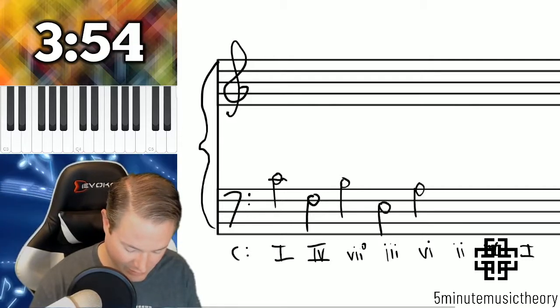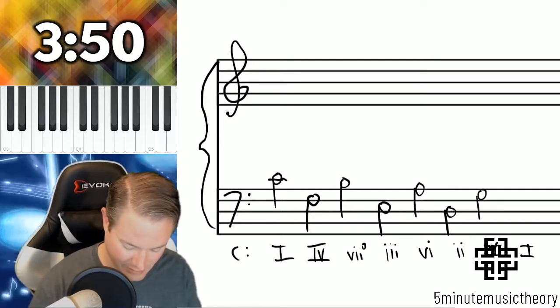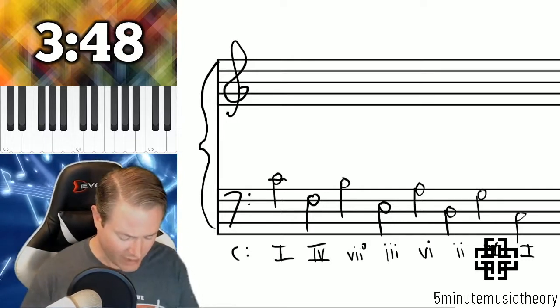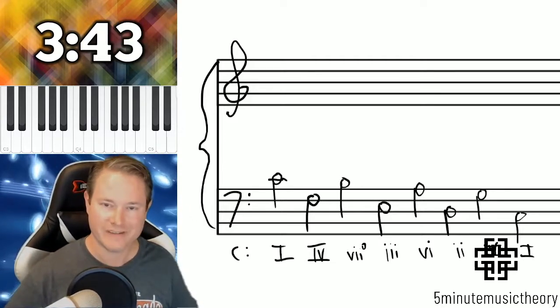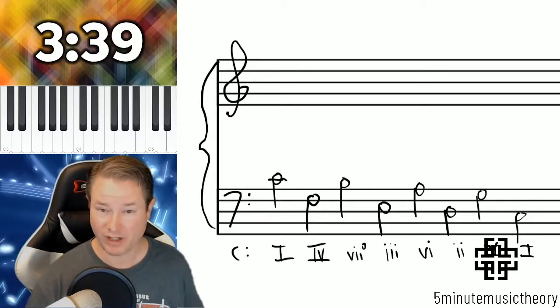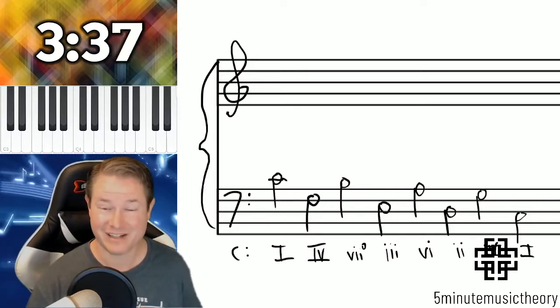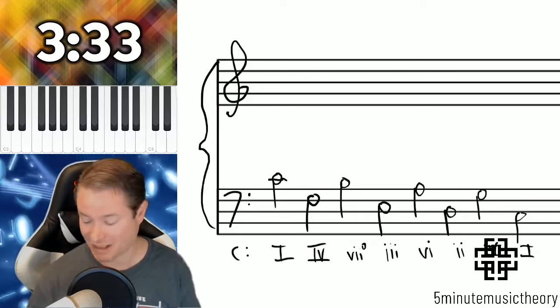And then we're going to go here, here, here, here. Now if we voiced these all as root position triads, we get a nice circle of fifths sequence, which is both a chord progression that follows the circle of fifths and is considered a sequence. And it's absolutely the most common sequence that exists.